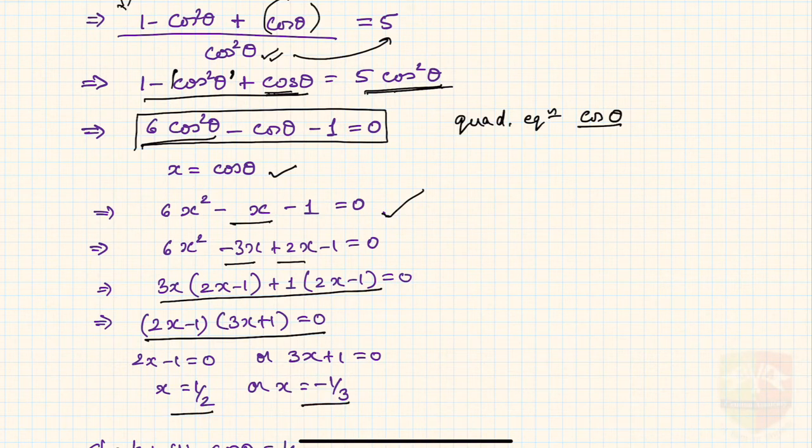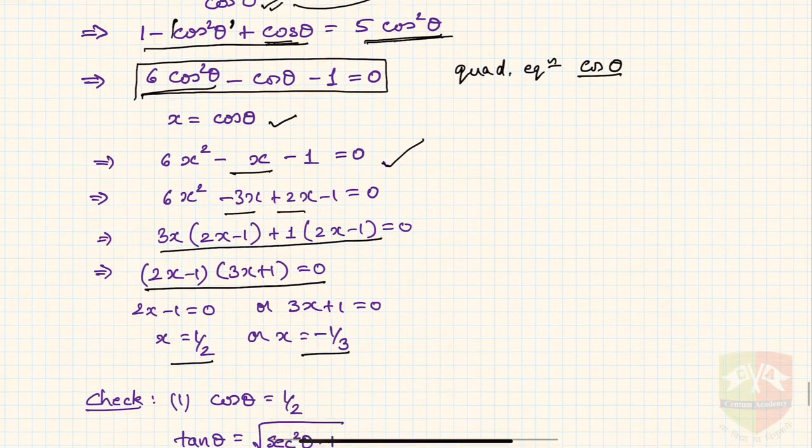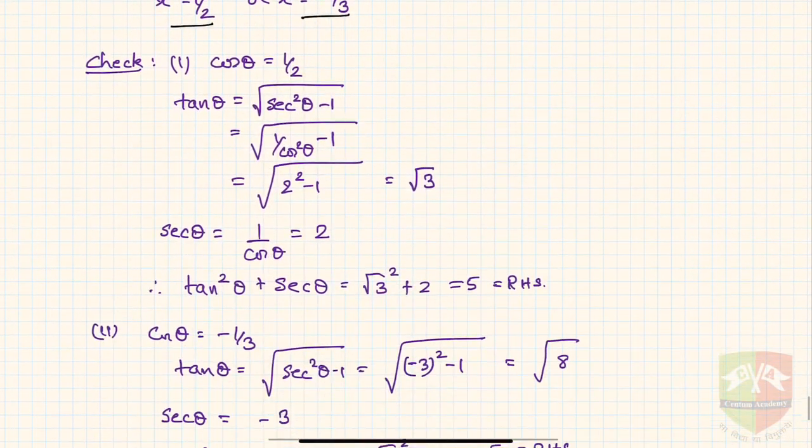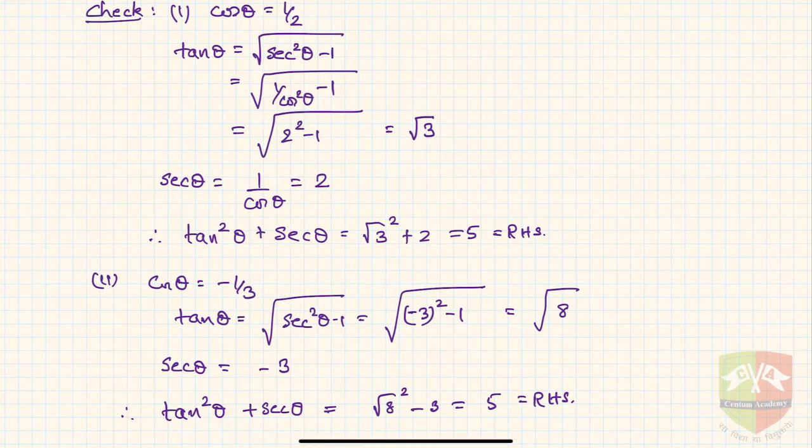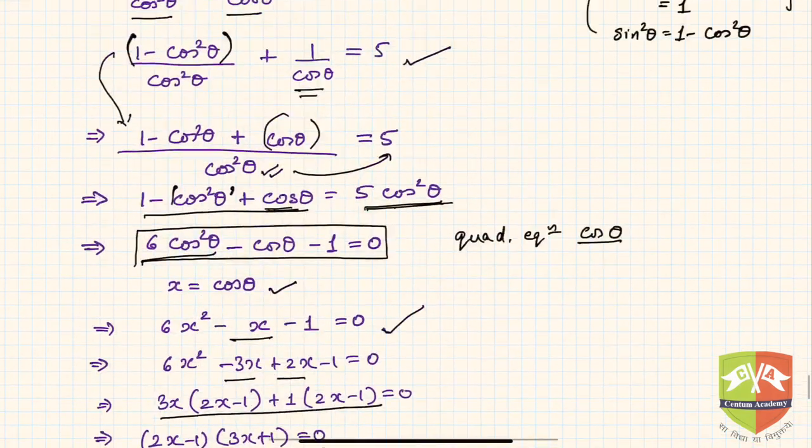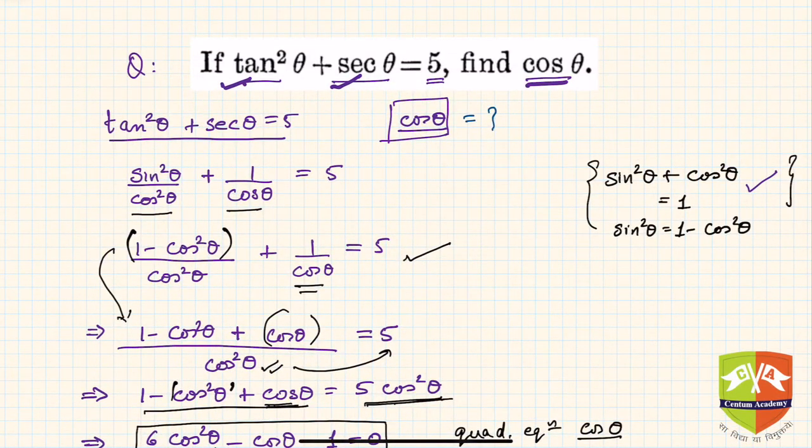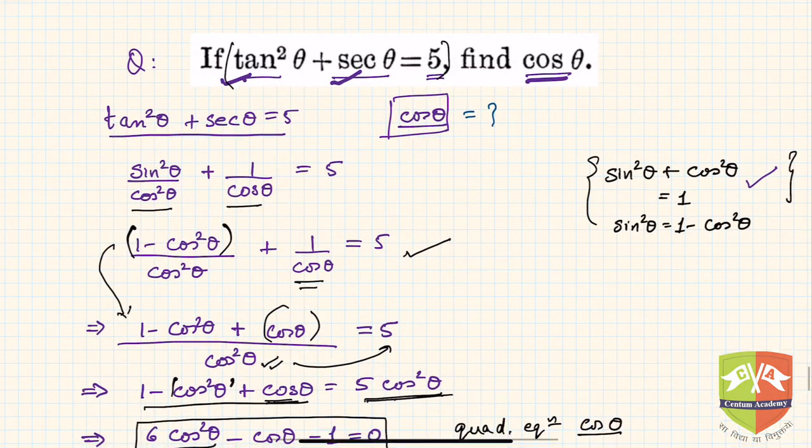Now we'll verify our solutions. If cosθ = 1/2, then tanθ = √3 and secθ = 2. Plugging these values back into the original equation, tan²θ + secθ = 3 + 2 = 5, so LHS equals RHS.